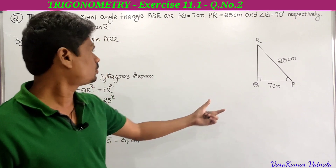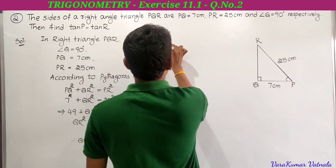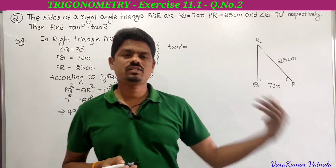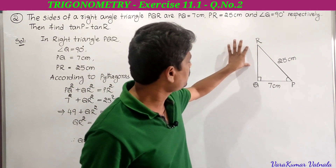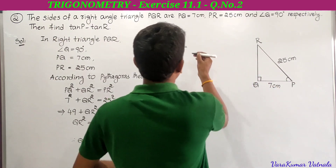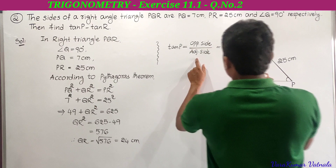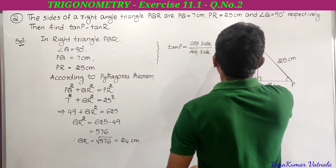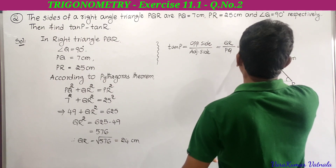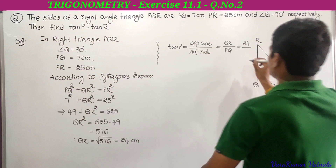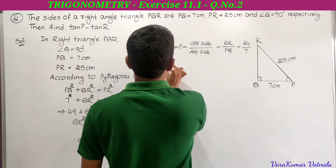Now we have the lengths of all three sides. He is asking to find tan P minus tan R. First, tan P equals opposite side by adjacent side. The opposite side to angle P is QR, and the adjacent side to angle P is PQ. So tan P equals QR divided by PQ, which is 24 divided by 7. Tan P equals 24 by 7.